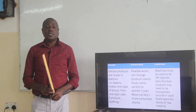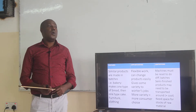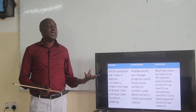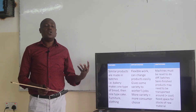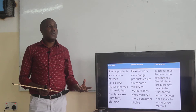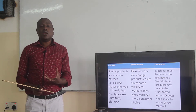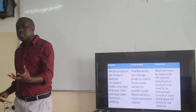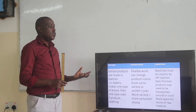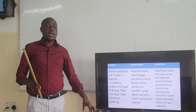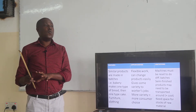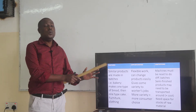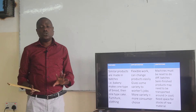In batch production we are producing similar products but in batches. They are similar but not identical. For example, in a bakery we are making bread and cakes which are different. We run a particular type of cakes, and once we finish, we clean and produce bread, we finish, and so on.